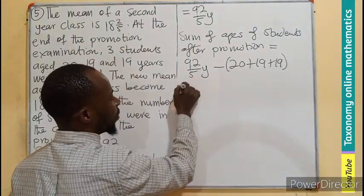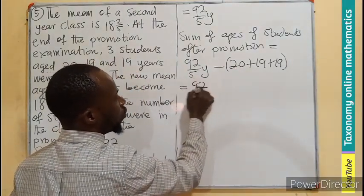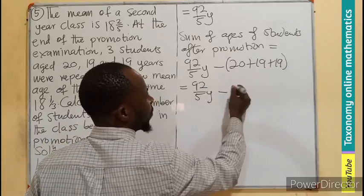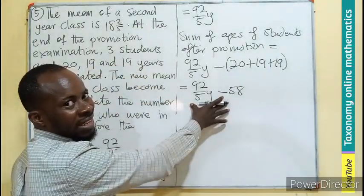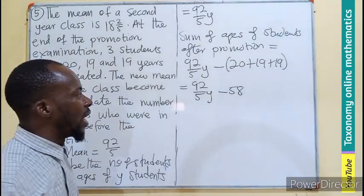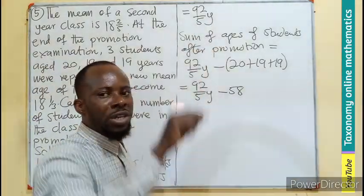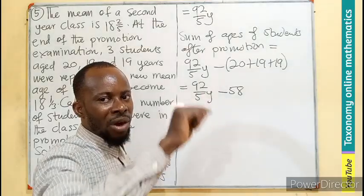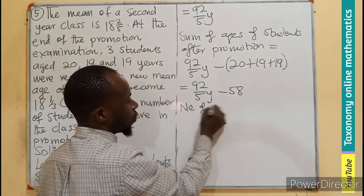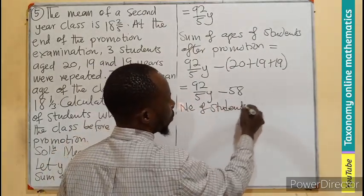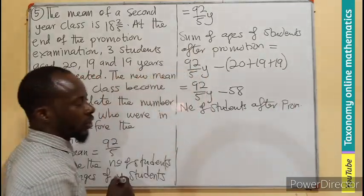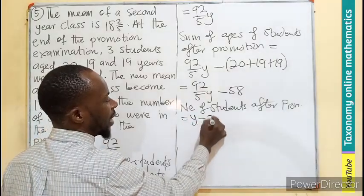We have 92 on 5Y minus 58. This is the sum of the ages after the promotion. After promotion, the number of students will also decrease by 3, so the number of students after promotion is Y minus 3.